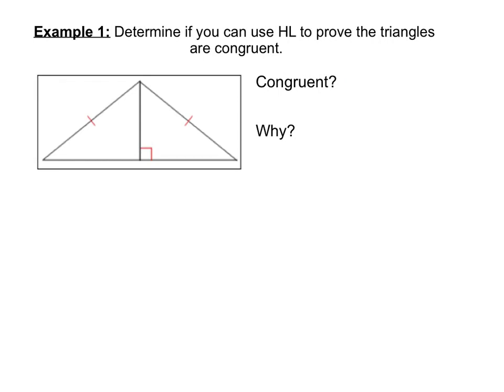For our last set of triangles here, you can see that the markings that we have there are the hypotenuse. Now, notice there is only one 90-degree angle, but because these two triangles are forming a line together, they're a linear pair, we know that this angle is also a 90-degree angle.